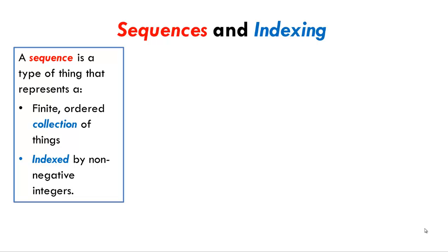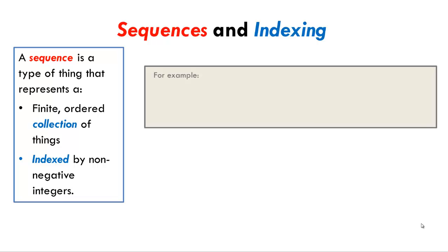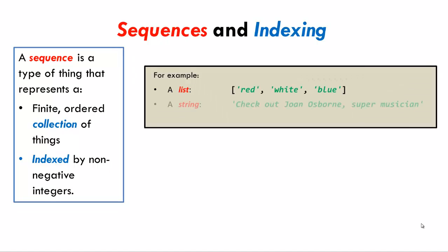In this lesson, we'll look at patterns for iterating or looping through sequences. First, a quick review. A sequence is an ordered collection of things indexed by non-negative integers. For example, we could have a list, or a string, or a tuple, and there are other kinds of sequences as well.